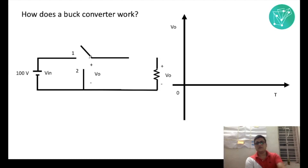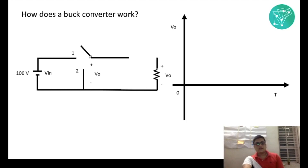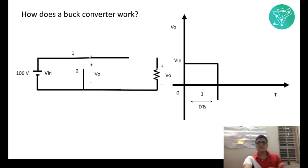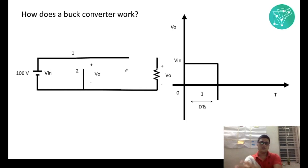So let's analyze how the output voltage would look when connected to each of the two points. First, when it's connected to position 0.1 for a time span of D·Ts — at this time, if you measure the voltage across V output, it's actually nothing but V input, which is 100 volts.